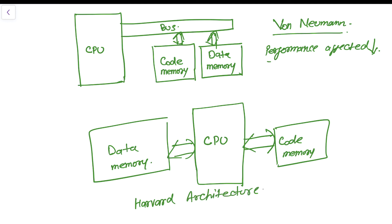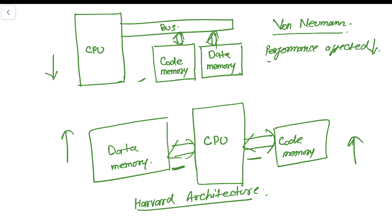In Harvard architecture, performance gets boosted because it has a separate bus for data and a separate bus for code. That means at the same time the processor can access the data memory as well as the code memory with different buses. In Von Neumann architecture, this is not present, so the hardware complexity is less and the hardware complexity is high in Harvard architecture.